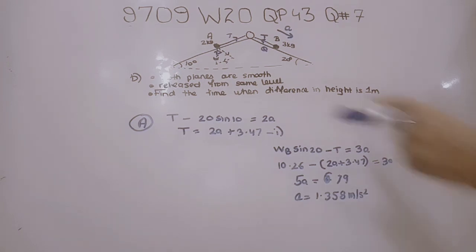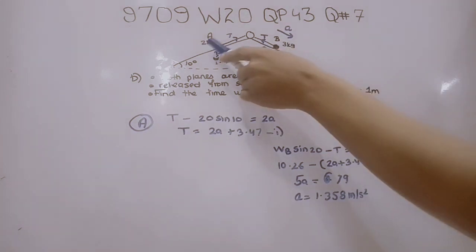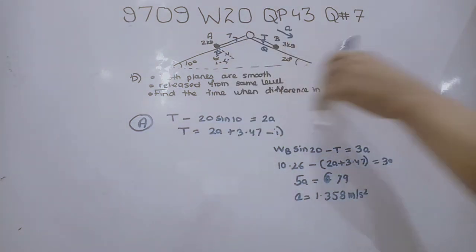Solving for A, we get 1.358 meters per second squared. This is our value of acceleration.